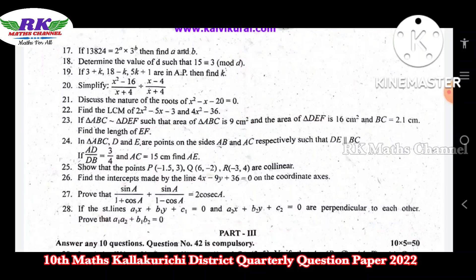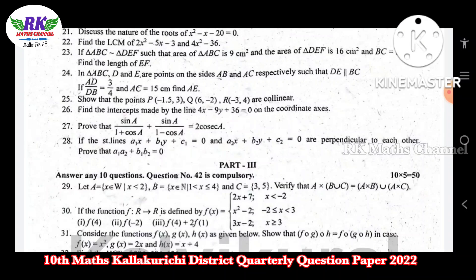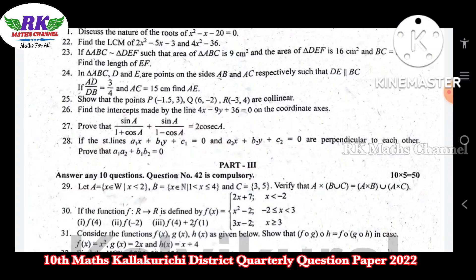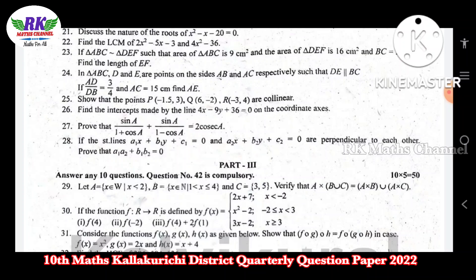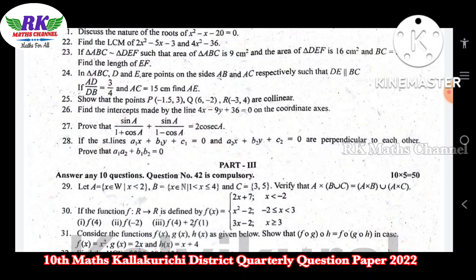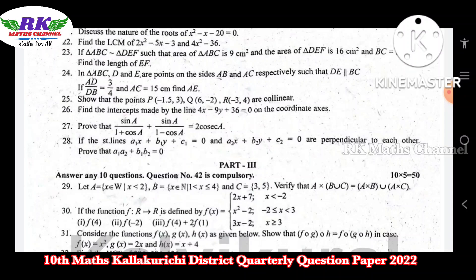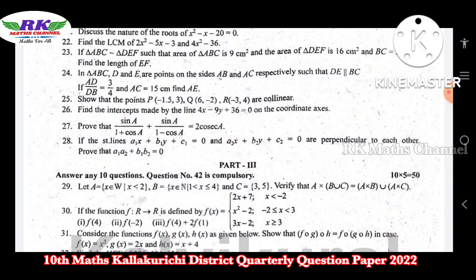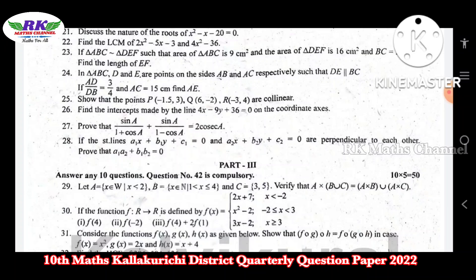Question number 25: points P, Q, R — that is a collinear argument. Area of triangle equal to 0 means the points are collinear. Question number 26: find the intercepts. The equation is x/a plus y/b equals 1 — use that to find the x and y intercepts. Question number 27: prove that a1 times a2 plus b1 times b2 equals 0, meaning two straight lines are perpendicular when their slopes multiply to give that result.